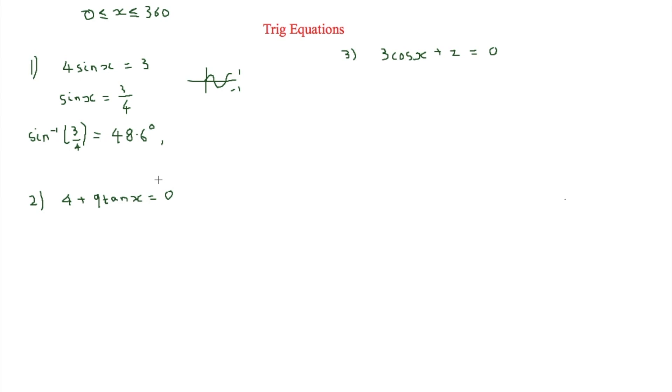With sine what we do is we do 180 minus the first answer. So 180 minus 48.6 is equal to 131.4 degrees.